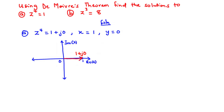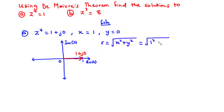Now let's find the value of r. We know that r, the modulus, is given by the square root of the x component squared plus the y component squared. That is equal to the square root of 1 squared plus 0 squared, which equals the square root of 1. Therefore, the modulus r equals 1.